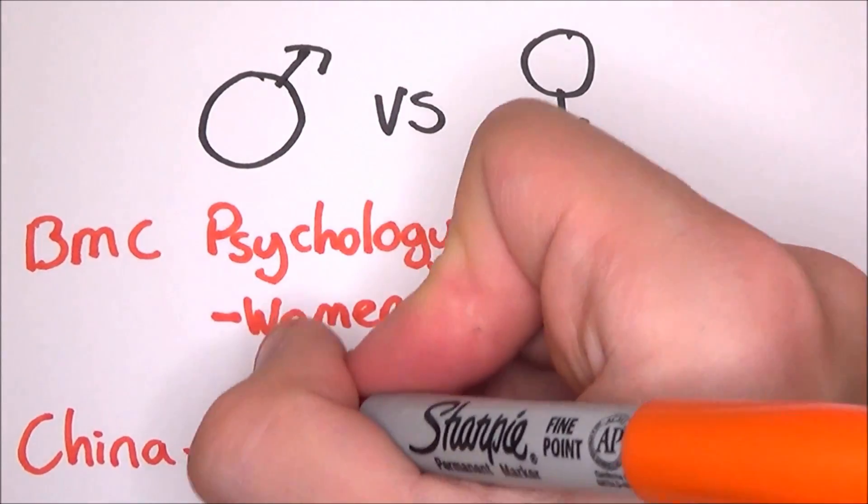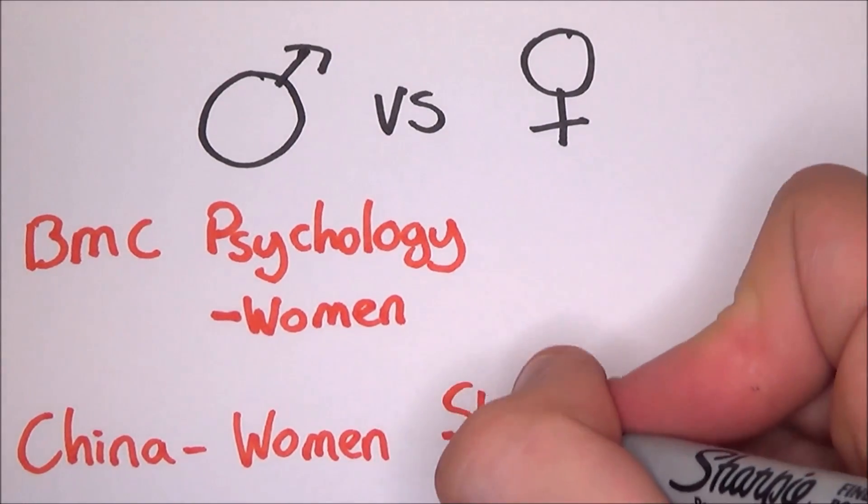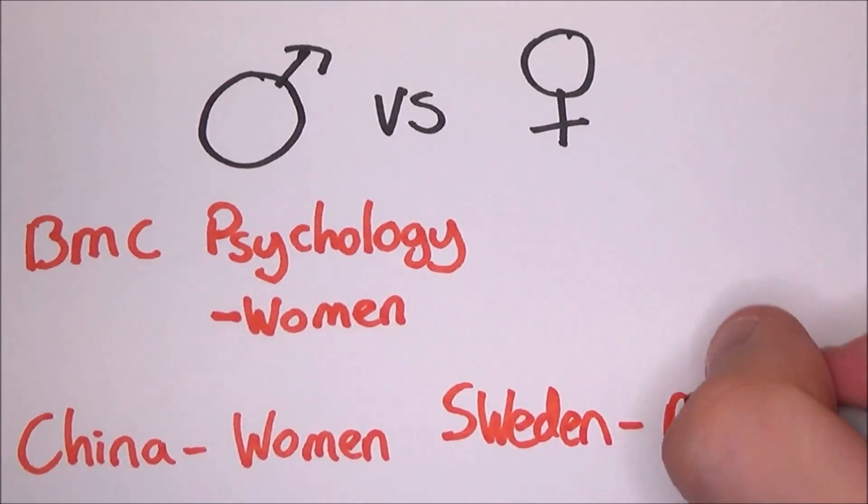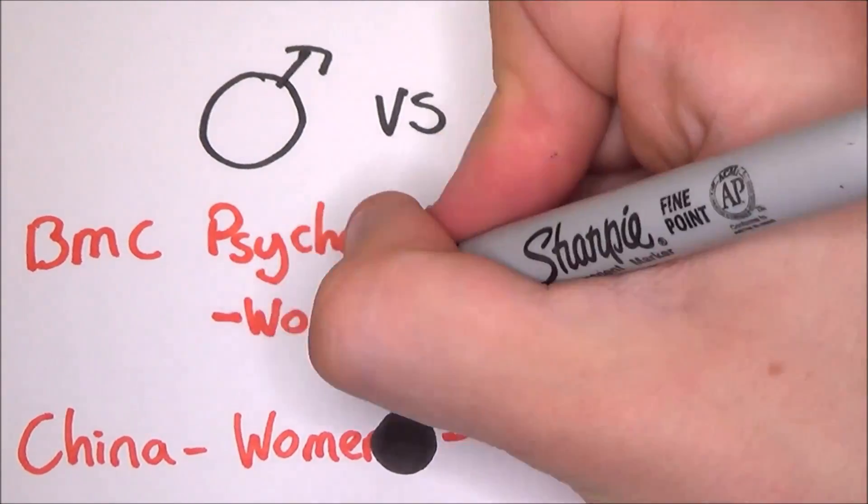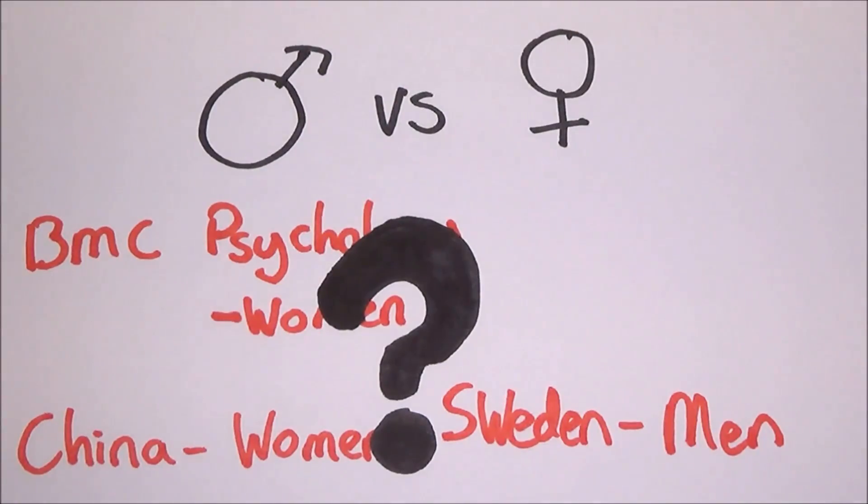However, every time there is a study, there are widely different results. A study in China said that women are better. A study in Sweden said that men are better. All this confusion can only lead to the fact that we don't actually know who is better.